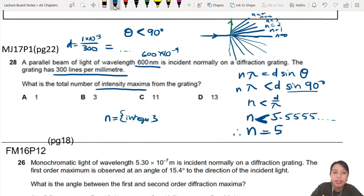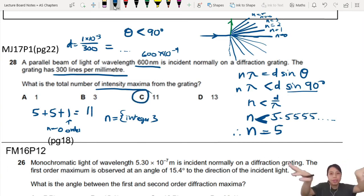In total, how many intensity maxima? You have 5 on one side, 5 on the other side, and 1 in the middle—the zero order. So in total you have 11 maxima in your grating that will split up.